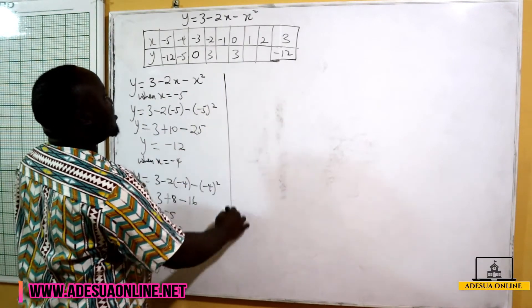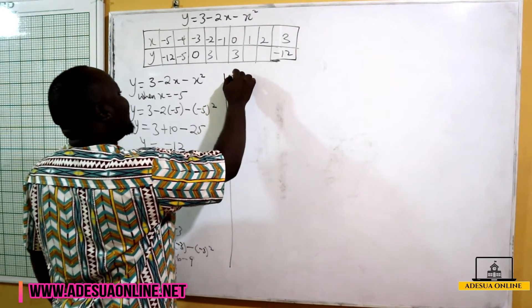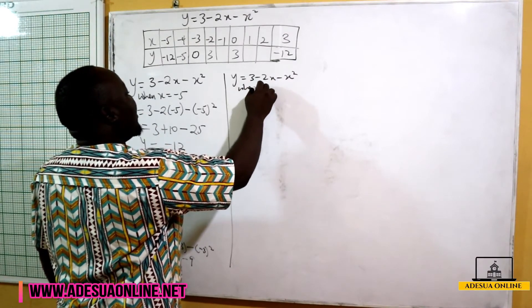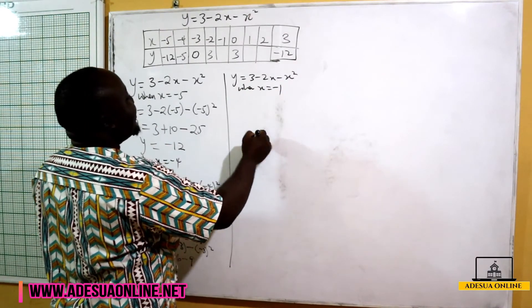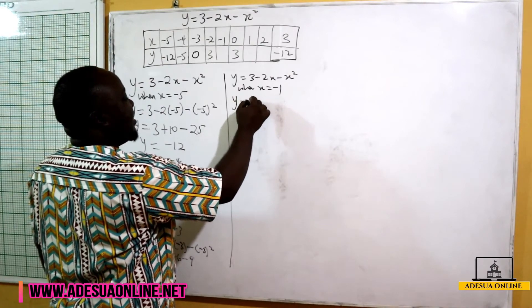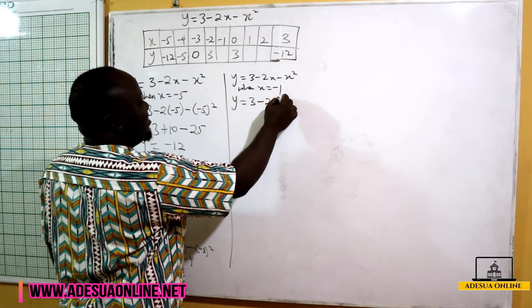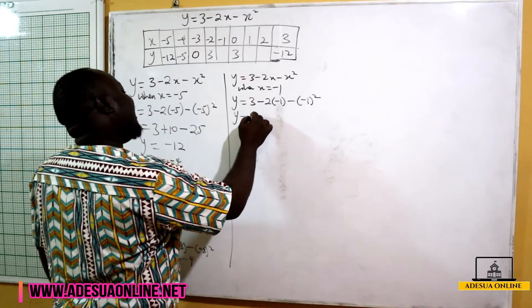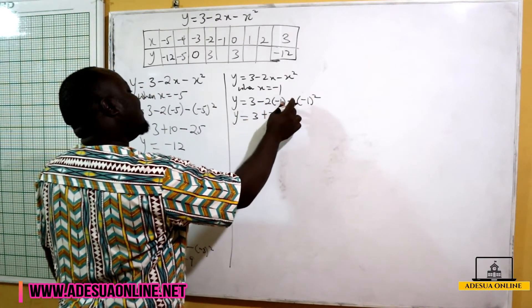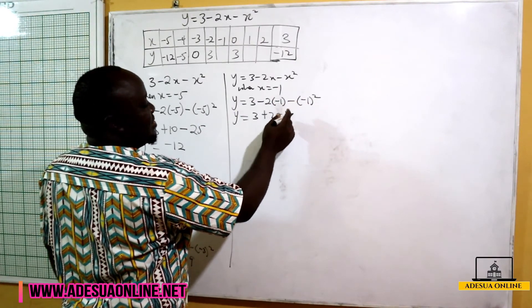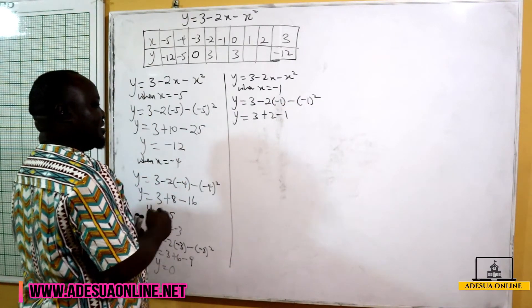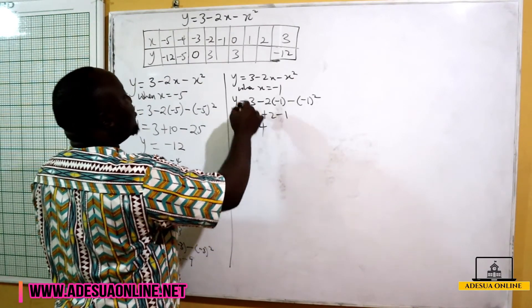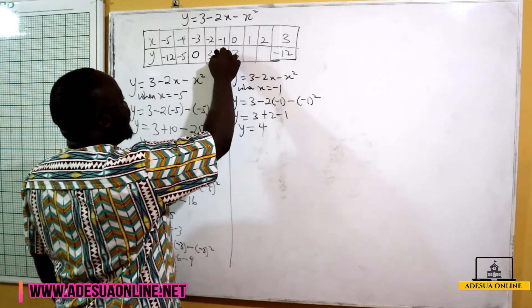The value at x equals negative 2 has already been given, so we move to x equals negative 1. When x equals negative 1, y equals 3 minus 2 times negative 1 minus negative 1 squared, giving us 3 plus 2 minus 1, which equals 4. So when x is negative 1, y is 4.